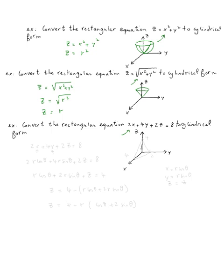Next example, we have two x plus four y plus two z equals eight. Now, let's start with z intercept will be eight over two, which is four. x intercept will be eight over four, which is two. So here's a portion of the plane. Now, we need to rewrite it. We know x is equal r cosine theta, y is equal r sine theta, and z we don't replace. Z is just z.